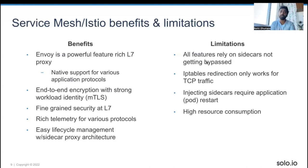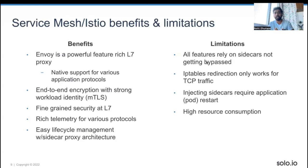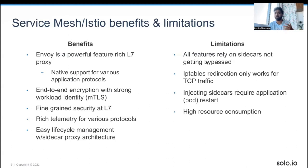A key limitation is that all features rely on the sidecar — nothing is getting bypassed. IP table redirection only works for TCP traffic; Istio currently works for TCP only, though UDP can be added in the future. Injecting sidecars requires an application pod restart. When dealing with various clients whose applications must keep running, they don't want to restart their pods — so that is a real limitation.